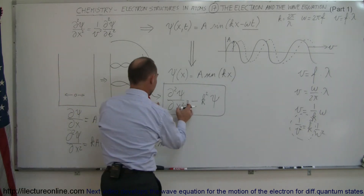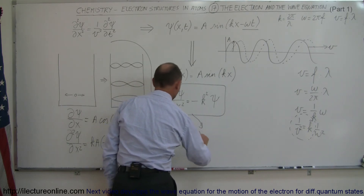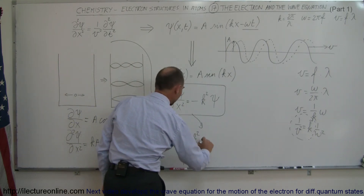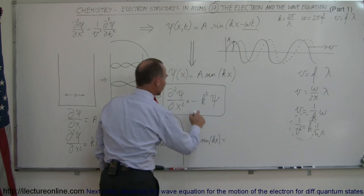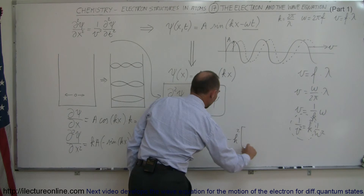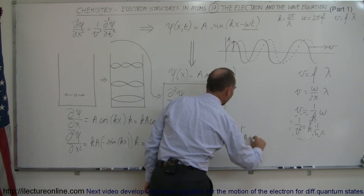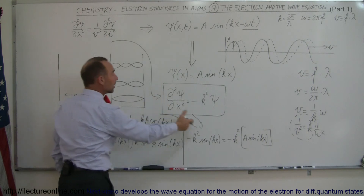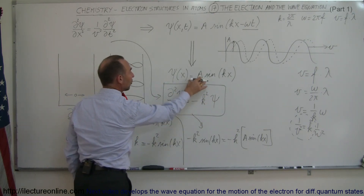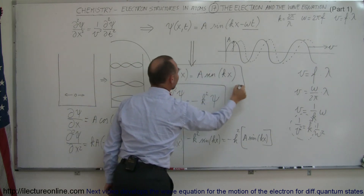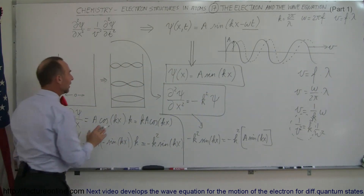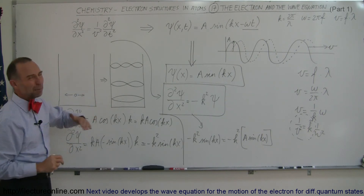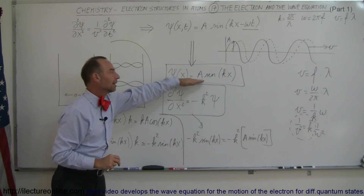Plugging that in, I get minus K squared times the sine of Kx, and that should equal minus K squared times the original function. The original function is A times the sine of Kx, and right away you can see that yes, the left side equals the right side. This means this is a proper equation to describe the wave function of an electron — we can define it by this sine function right there. So we can say that the wave positions of the electron should be describable by this equation, which is the foundation we're going to use to describe the position of an electron in an atom.